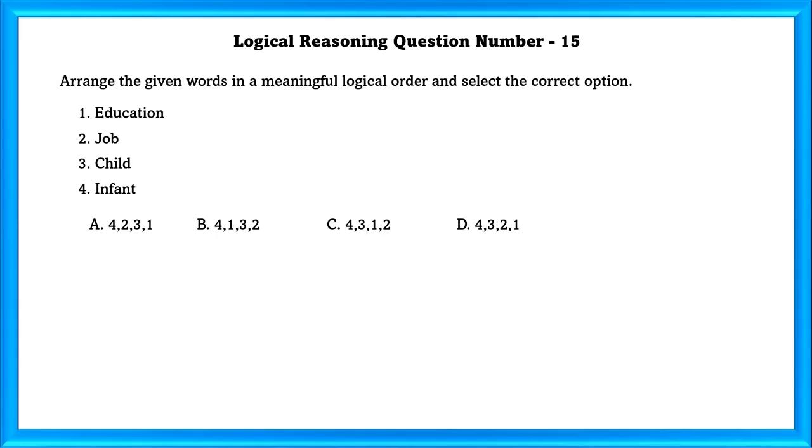Logical Reasoning Question Number 15. Arrange the given words in a meaningful logical order and select the correct option. The baby will be an infant and then a child and then it will educate and then it will get a job. So 4, 3, 1, 2. That is the C option.